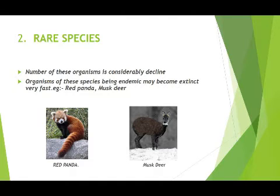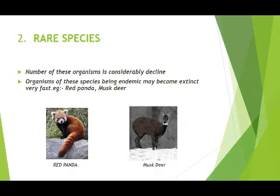Rare species means a group of organisms that are very uncommon and scarce — very few in number and not abundant. These organisms are reducing very fast and can become extinct in the near future. Animals included in rare species are the red panda, musk deer, one-horned rhinoceros, and snow leopard.